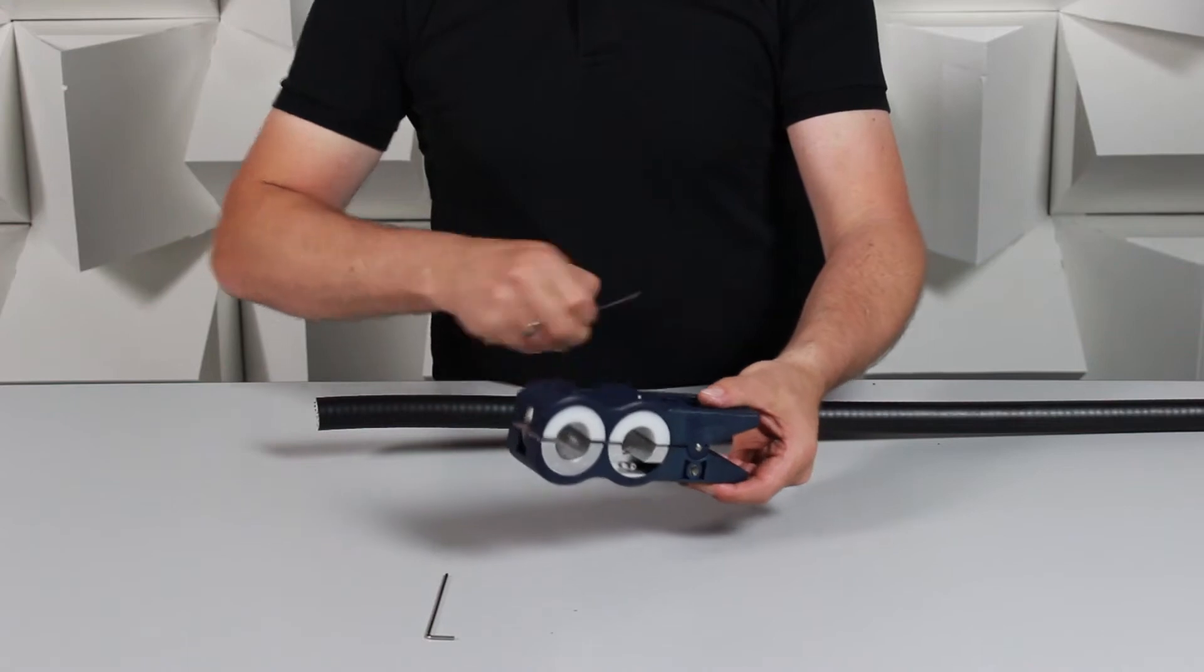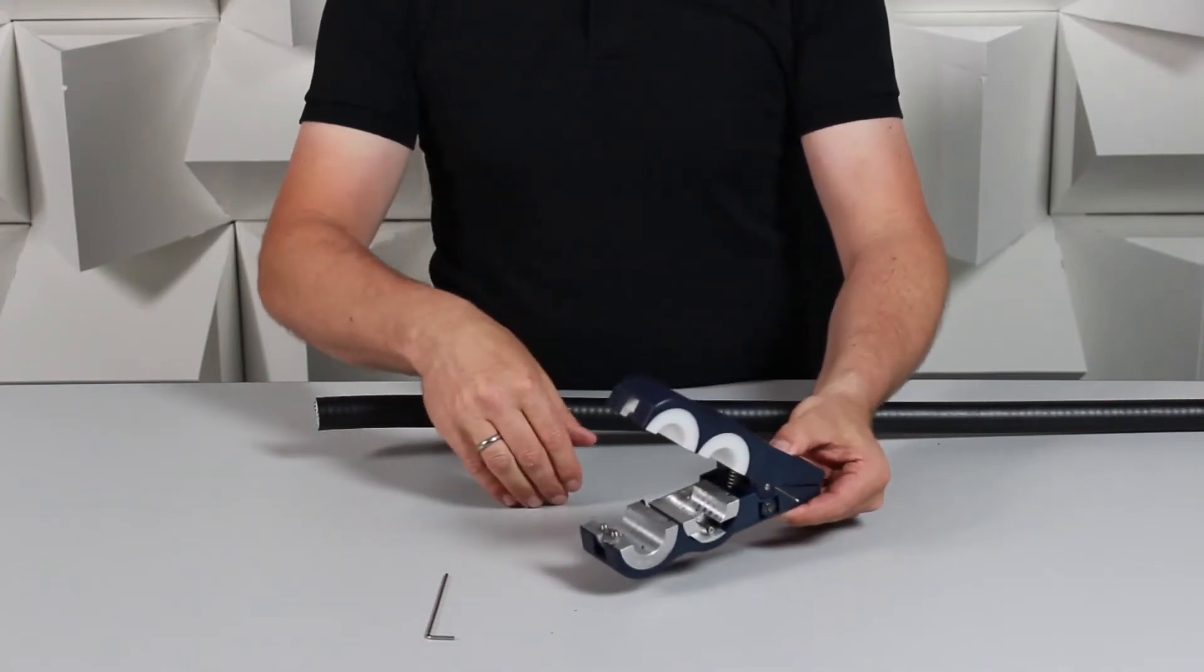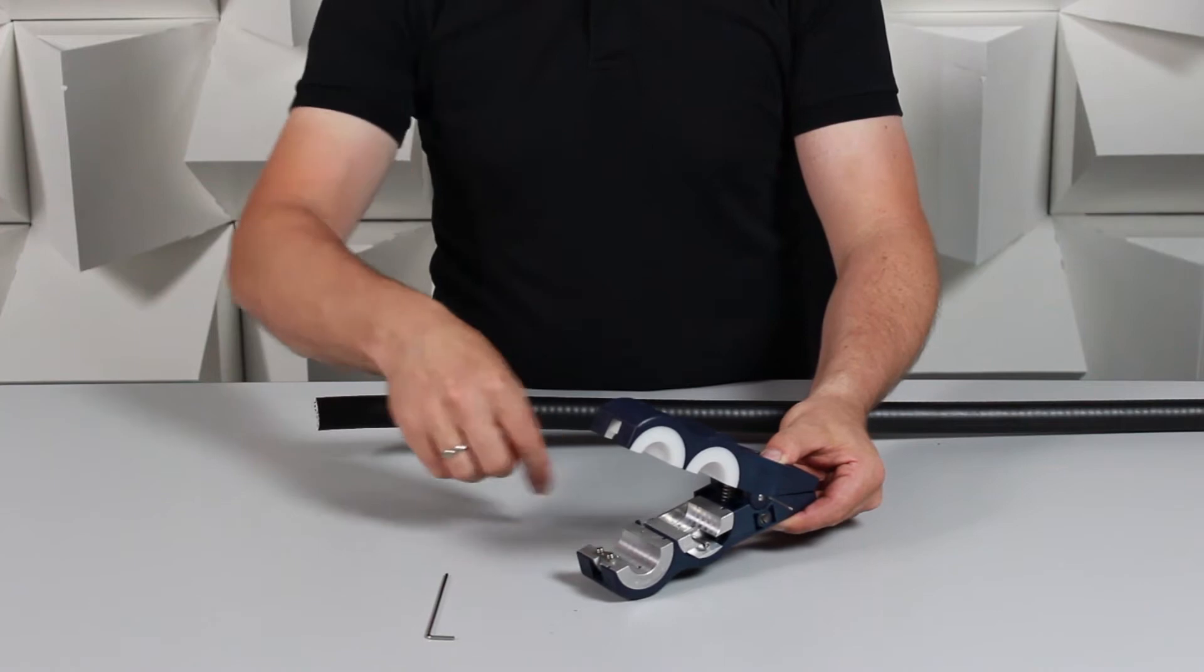At the front of the tool we have the jacket stripping blade, which can be adjusted for cables with thicker or thinner jackets.